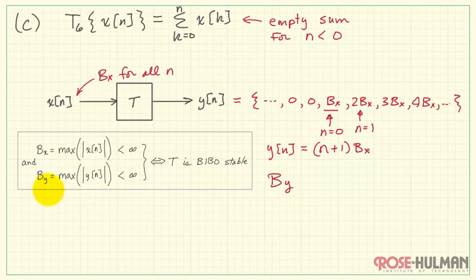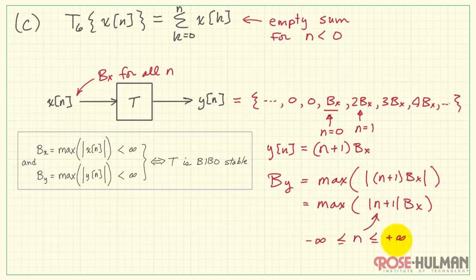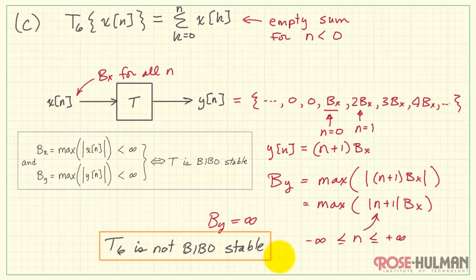Now the bound is the maximum absolute value of Y of N sequence. I can take BX out of this, and we're left with the maximum absolute value of N plus 1. N is our time index that can run from minus infinity to plus infinity. Therefore, our bound is infinite, and T6 is not BIBO stable.